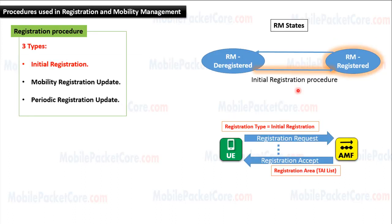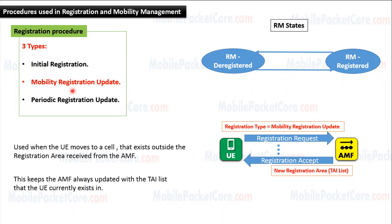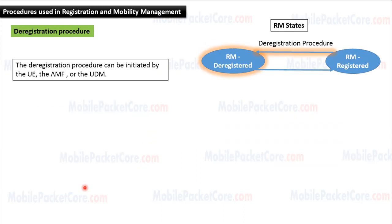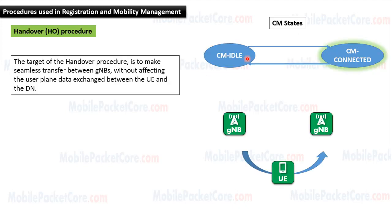In summary: the Initial Registration Procedure moves the UE from RM Deregistered State to RM Registered State. The Mobility Registration Update Procedure is used when the UE moves to a cell outside the registration area received from the AMF. The Periodic Registration Update Procedure is used when the UE is in CM idle state, so that every periodic amount of time the UE initiates Periodic Registration Update to inform the network that the UE is still reachable. The Deregistration Procedure moves the UE from RM Registered State to RM Deregistered State. The Handover Procedure is used while the UE is in CM connected state and moves between different gNodeBs, to make seamless transfer without affecting the user plane data exchanged between the UE and the data network.